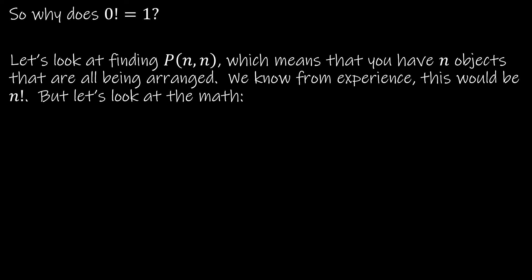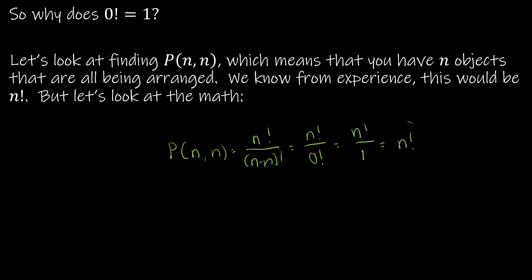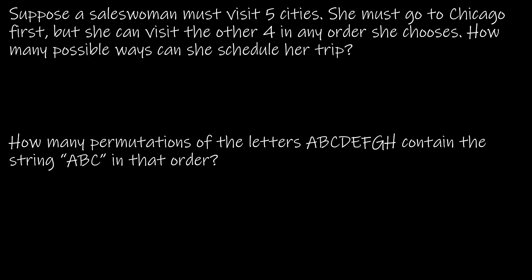Let's revisit why 0! = 1. First, mathematically: P(n, n) = n! / (n − n)! = n! / 0!. We know P(n, n) should equal n!, so 0! must equal 1 for the math to work. Second, intuitively: how many ways are there to arrange 0 objects? There's exactly one way — you simply have nothing to arrange. So 0! = 1.